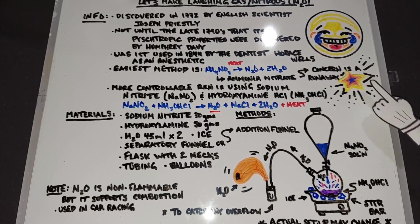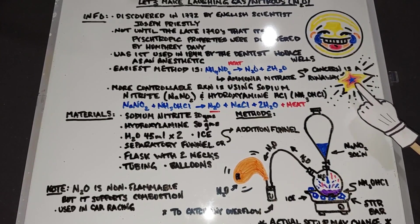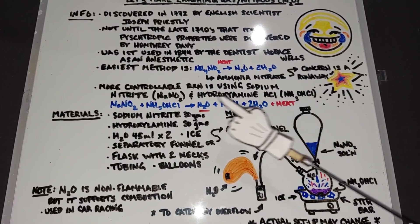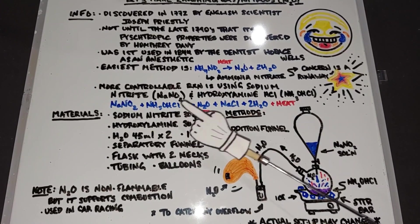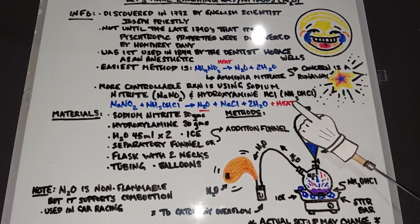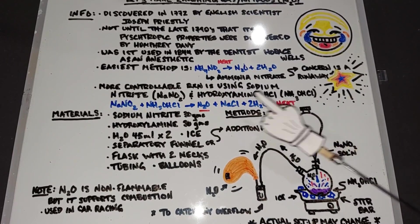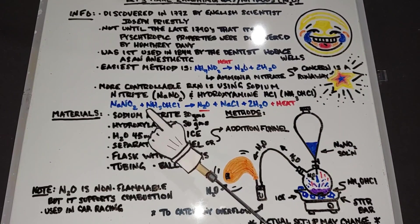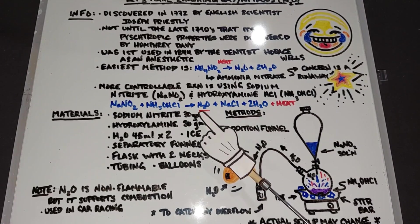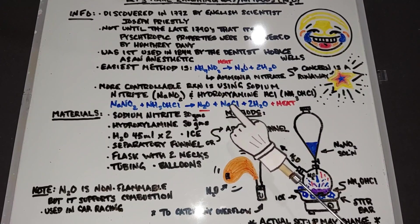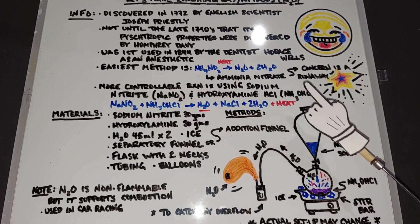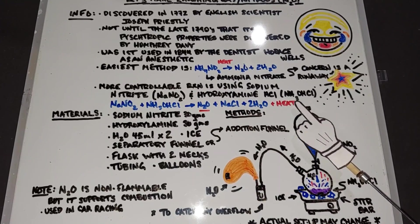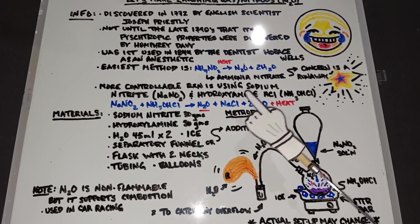A more controllable reaction is using sodium nitrite NaNO2 and hydroxylamine hydrochloride NH3OHCl. In that reaction you mix the two together, you get nitrous N2O and salt water NaCl and H2O plus some heat as it's pretty exothermic. This is the method we'll be using.